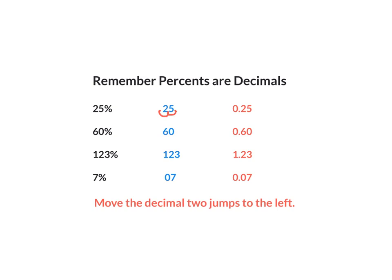Now 60% — I want to convert that to a decimal. My decimal is at the end. Move two places to the left — one, two. My answer is 0.60. I want to convert 123%. My decimal is at the very end. I'm going to move two places to the left — one, two. My answer is 1.23. I want to convert 7% to a decimal. My decimal is at the far end. Move two places to the left — one, two. My answer is 0.07. So all you have to do is move the decimal two jumps to the left.